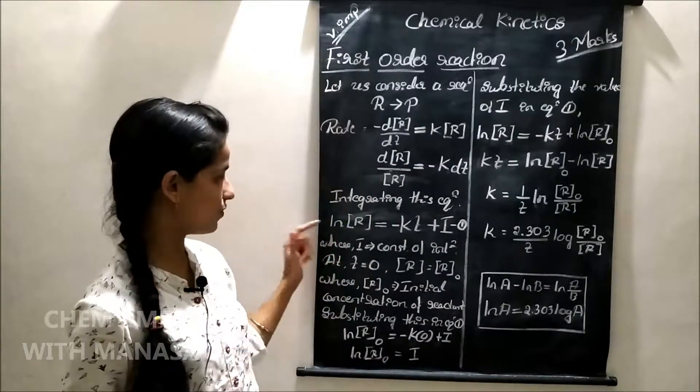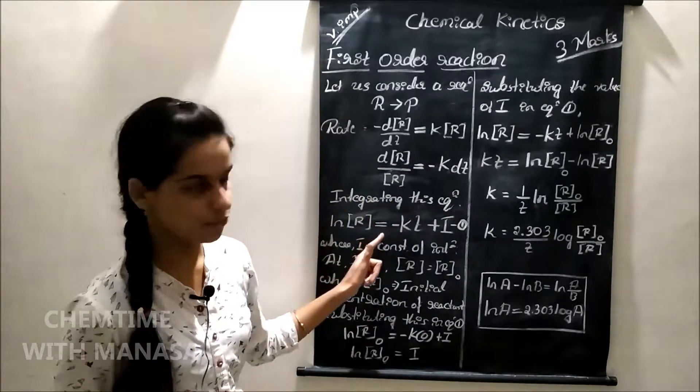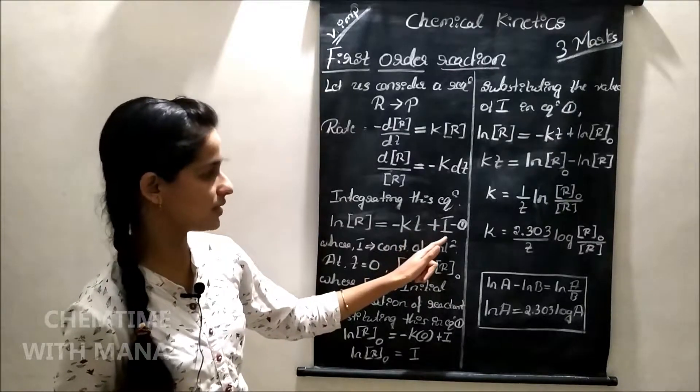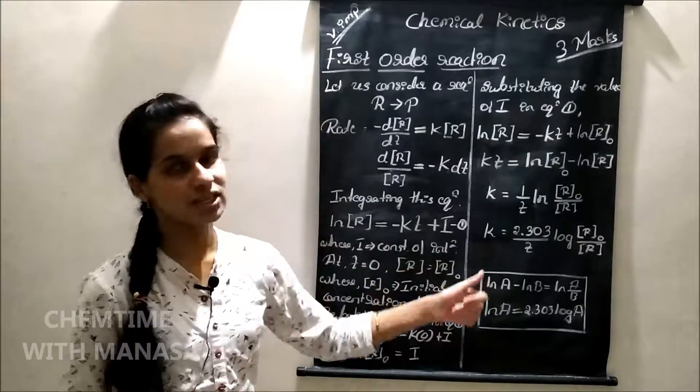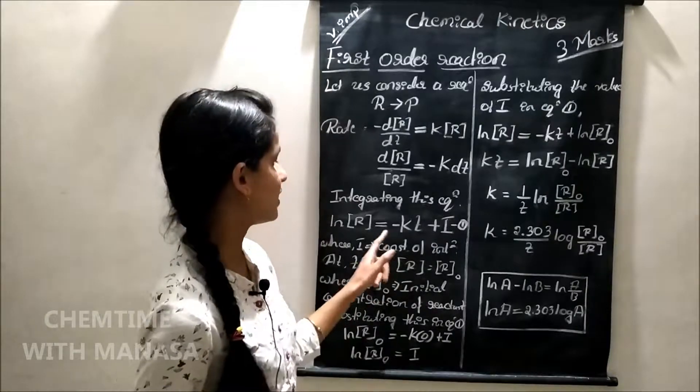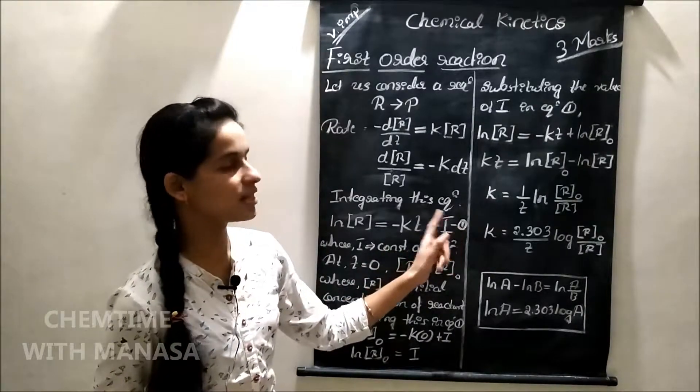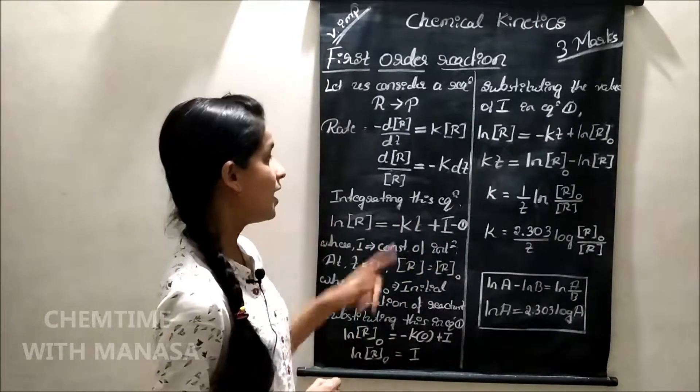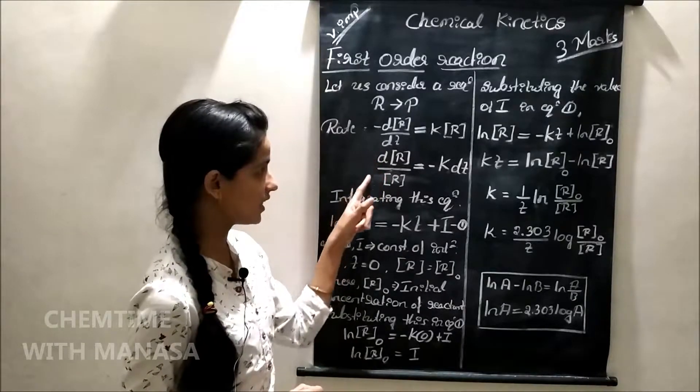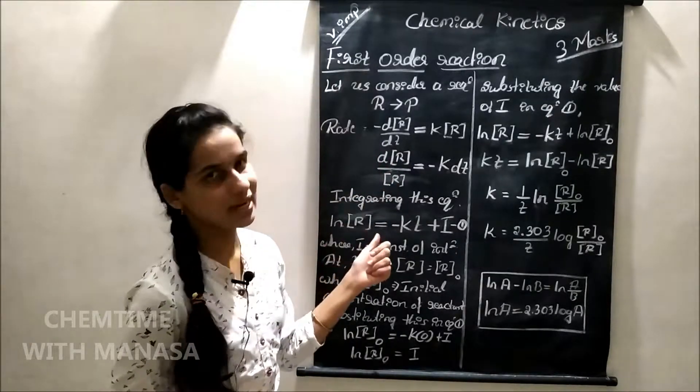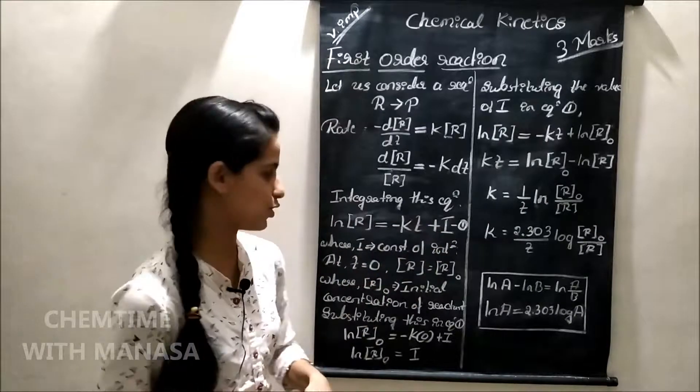Integrating this equation, we get ln R is equal to minus Kt plus i, where i is constant of integration. Let us name this equation as equation number 1, because integration of dR by R is equal to ln R.